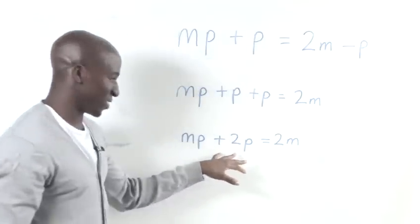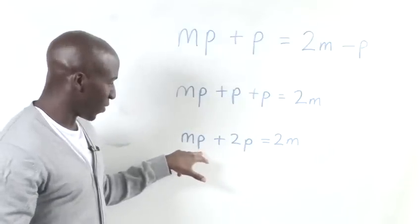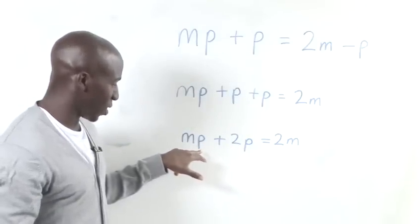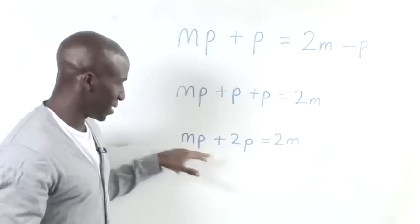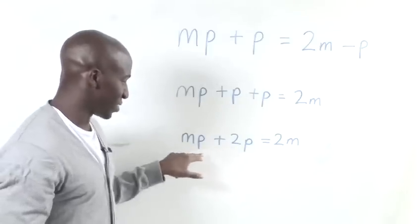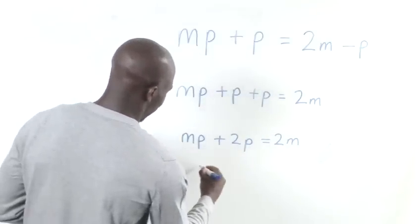Now, we're going to perform something which is known as factorization. When we factorize, we're looking for a multiplier that occurs in this term and this term. As you can see, it's the P. So we're going to take the P's out and then see what we're left with.